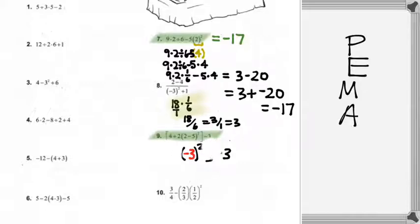It's being applied to, well, what's being squared here? The negative 3. And what does it mean to square the number negative 3? Multiply it by itself. So what do I multiply? Negative 3 times negative 3.